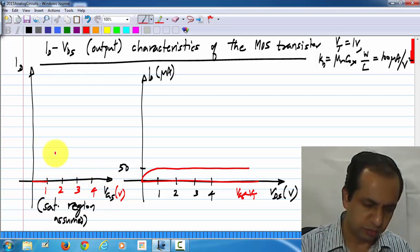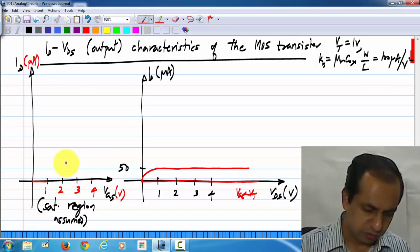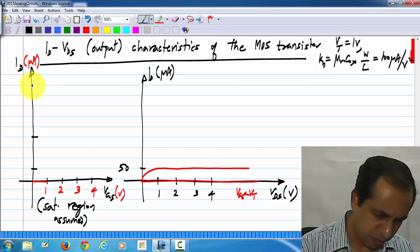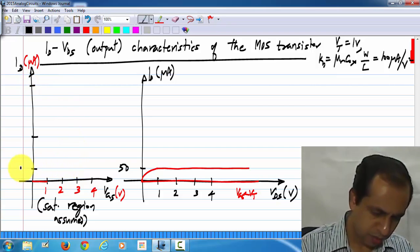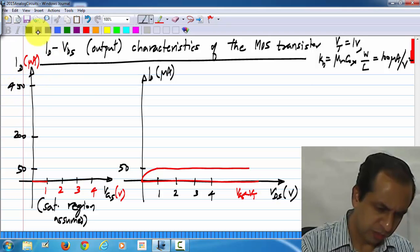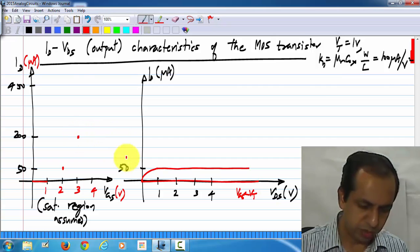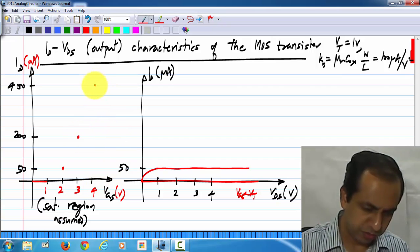This is in volts, this is in microamperes. For a VGS of 2 volts, we have 50 microamperes. For 3 volts, we have 200 and for 4 volts, we have 450.